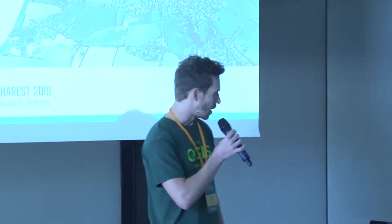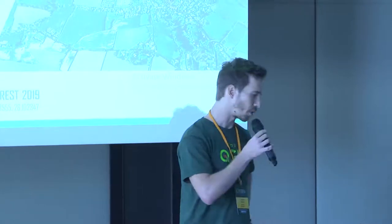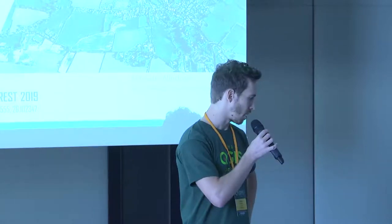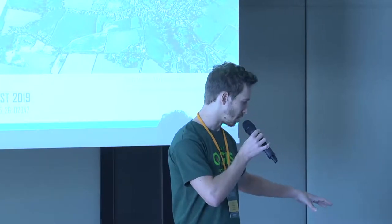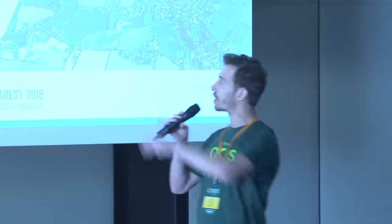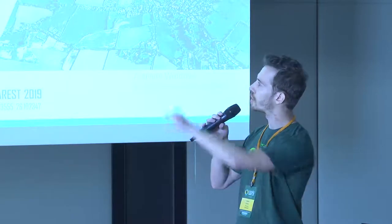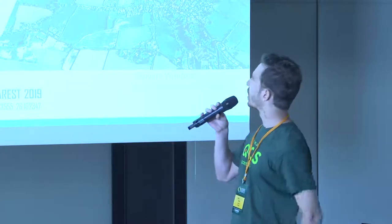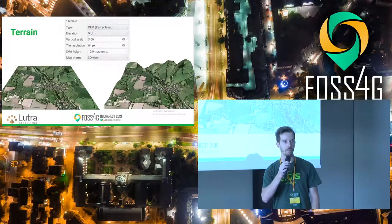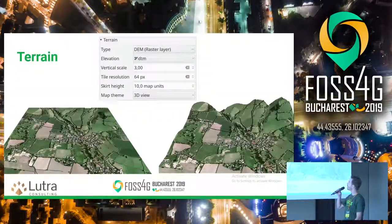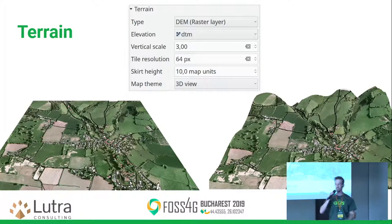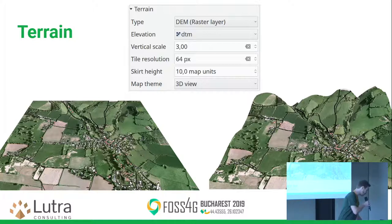The terrain can be configured in the configuration dialog. On the left side you can see the default view when the terrain is just flat with texture on top. On the right side, when we already apply a digital elevation model. You can also set the vertical scale to make your 3D terrain look more pronounced.